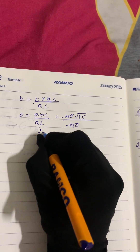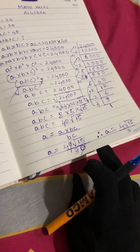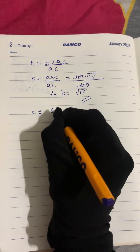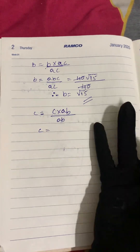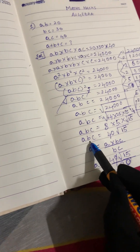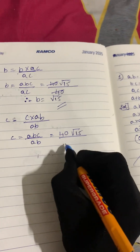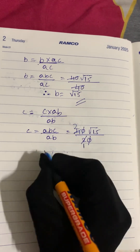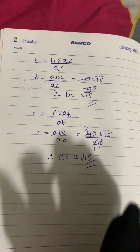Now we find the value of c. c = abc ÷ ab. The value of abc is 40√15 and ab = 20. Canceling one zero from each: 40÷20 = 2. Therefore c = 2√15.